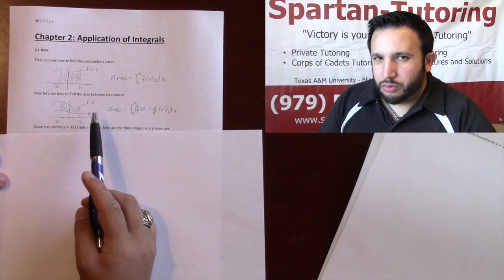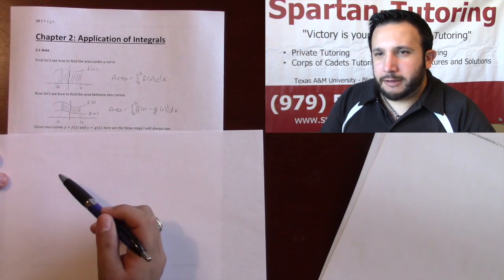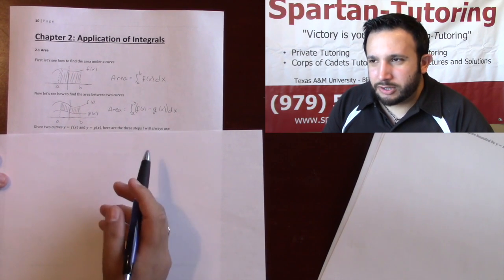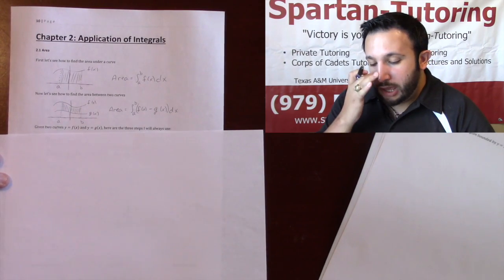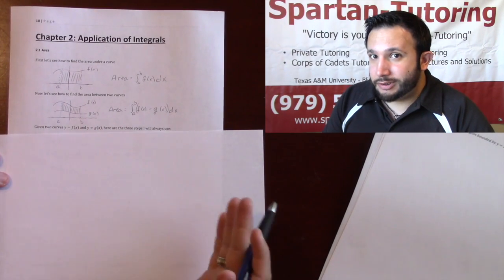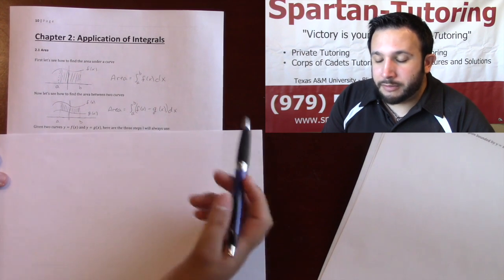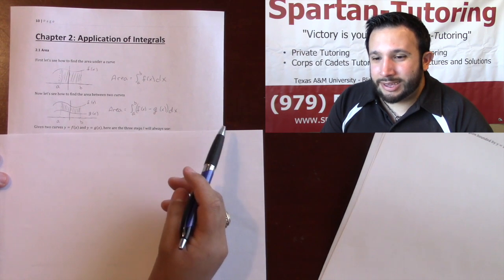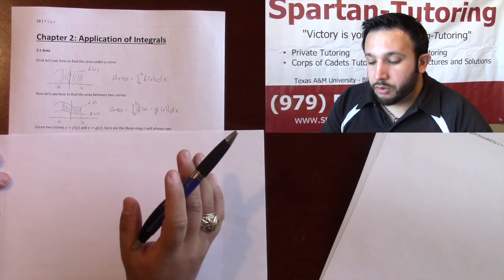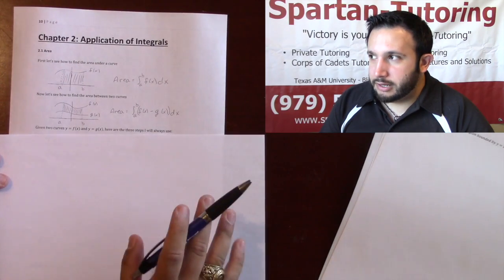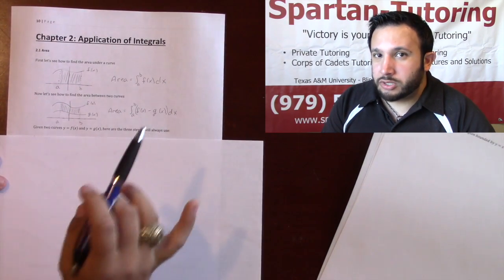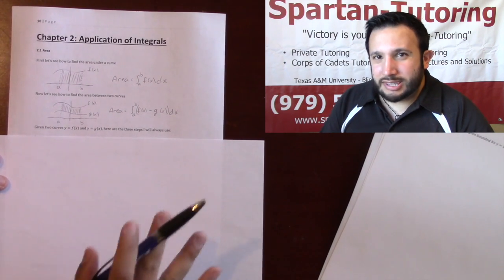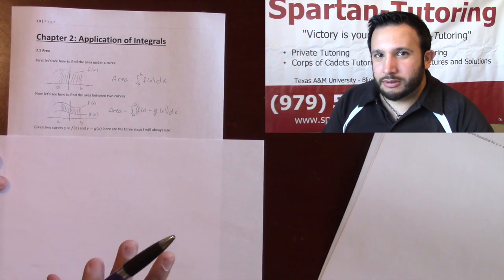Now here's the issue with drawing this pictorially. If you have trouble drawing functions, or the functions are just really nasty and they don't give you a picture, I don't want you to depend on the picture. If you can draw the picture, that's going to make your life a lot easier, because area is just the integral from a to b of top minus bottom. However, if you have trouble with that, that's okay — most people do. So the way I designed this lesson, I'm going to assume you don't know how to sketch these graphs, so that these three steps I'm about to show you work every single time.